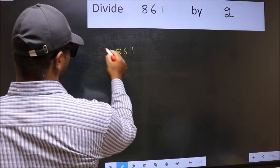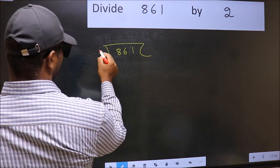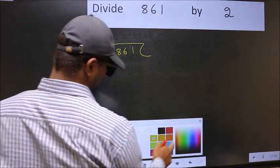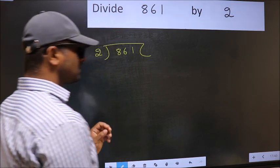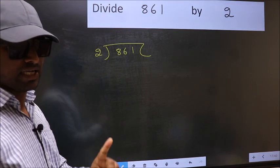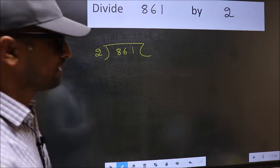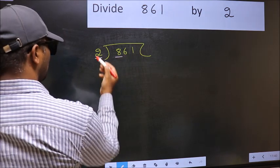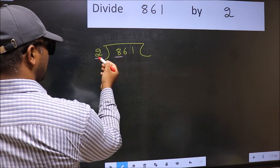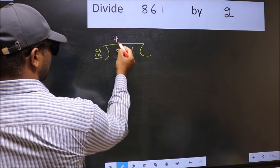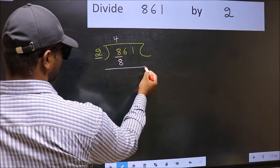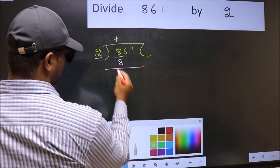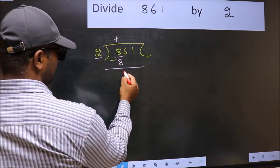861, 2 here. This is your step 1. Next, here we have 8 and here 2. When do we get 8 in 2 table? 2 fours 8. Now you should subtract. 8 minus 8, 0.